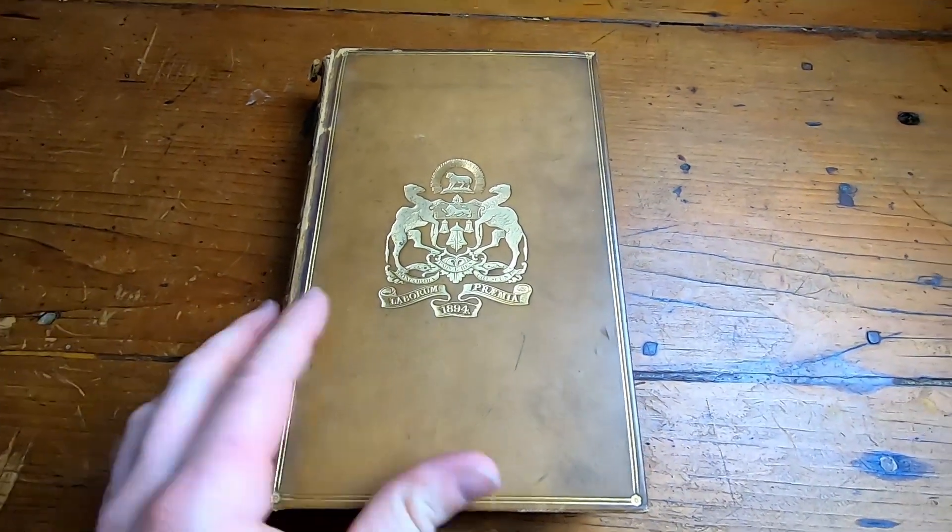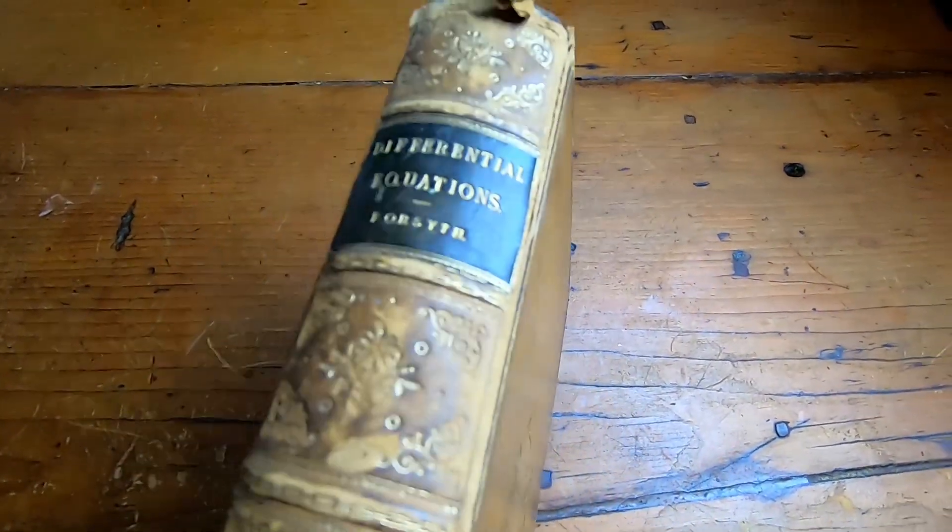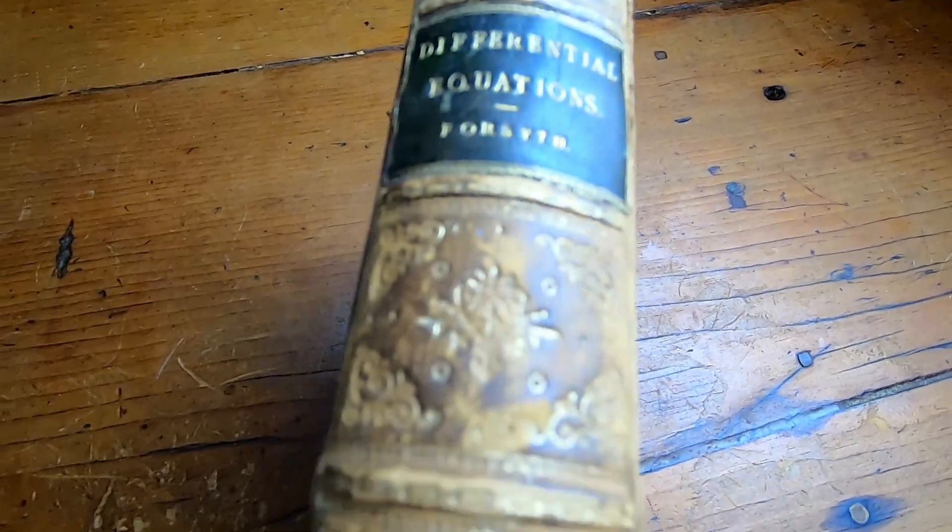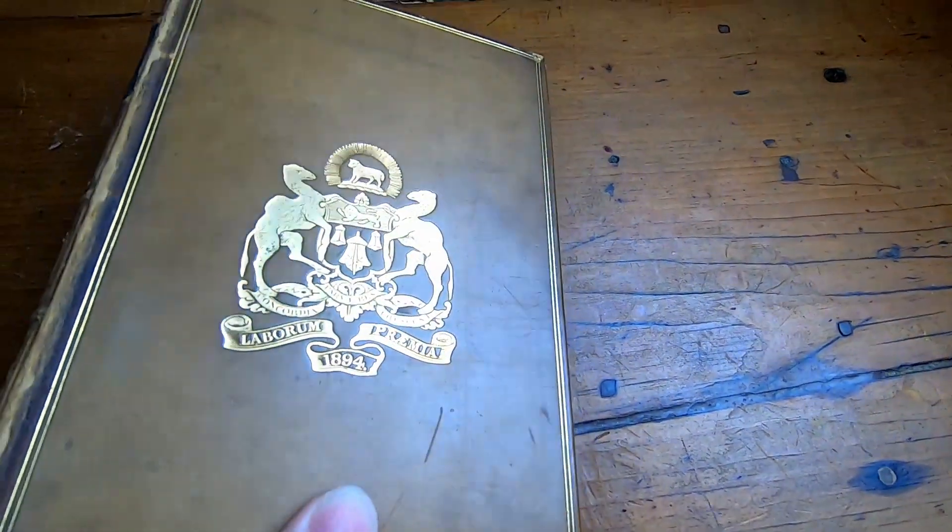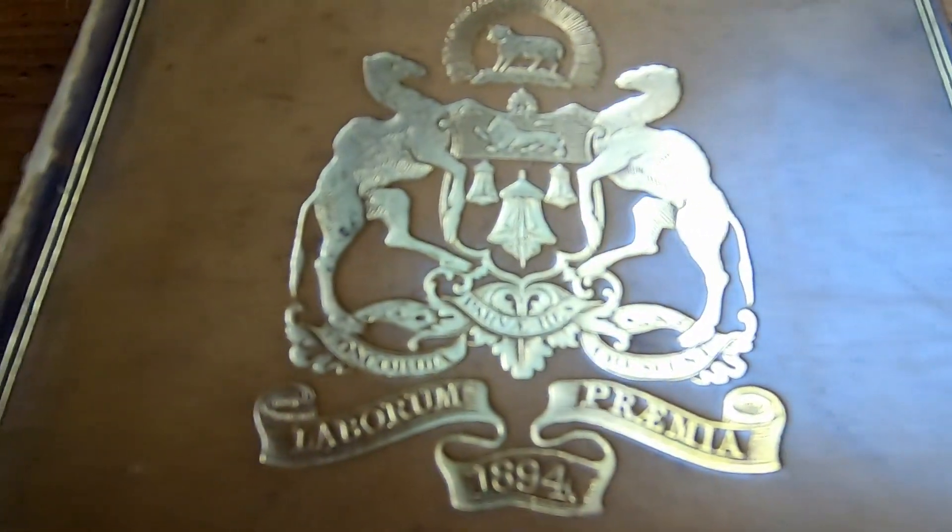This is a book from the 1800s. Let me just turn it over on the side here so you can see. Differential Equations by Forsyth. Look at the binding. I wish you could smell the book. It has a very peculiar smell. It's really, really old.